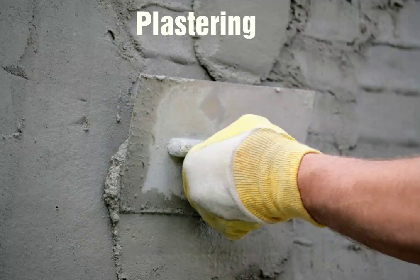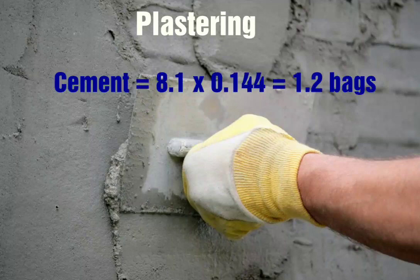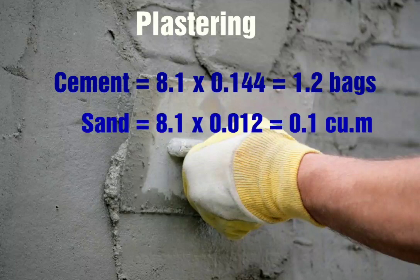Calculating the quantity for plastering at Class B mixture: for cement, 8.1 times 0.144 is equal to 1.2 bags of cement. And for sand, 8.1 times 0.012 is equal to 0.1 cubic meters of sand.